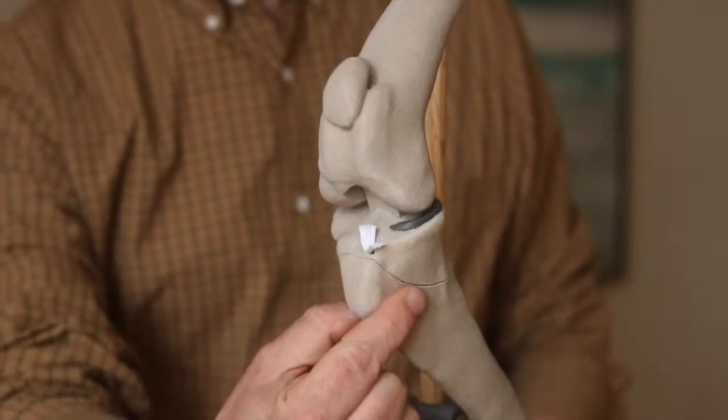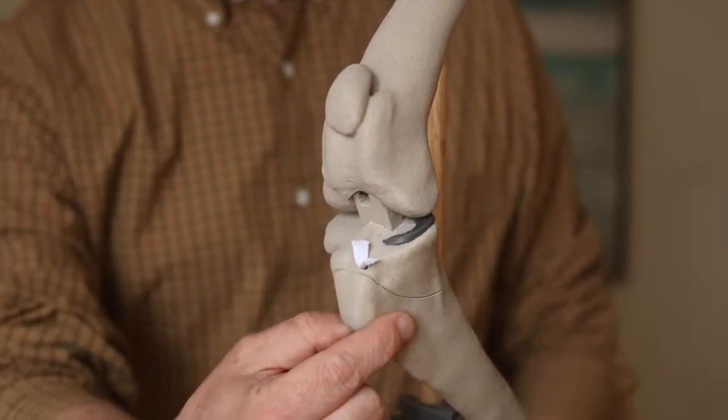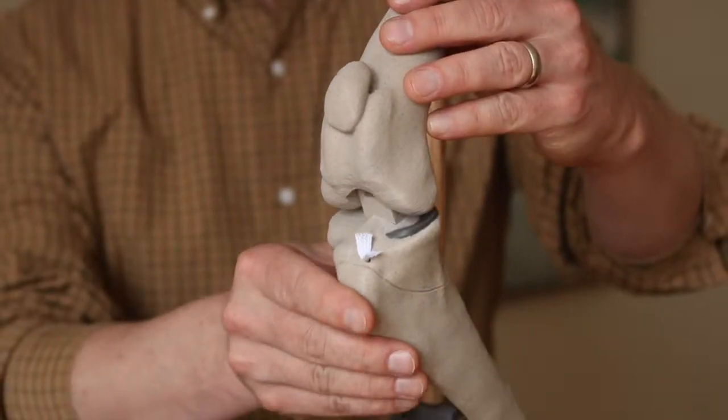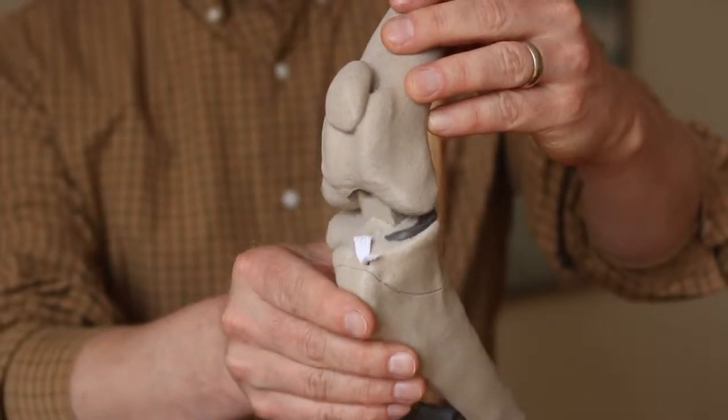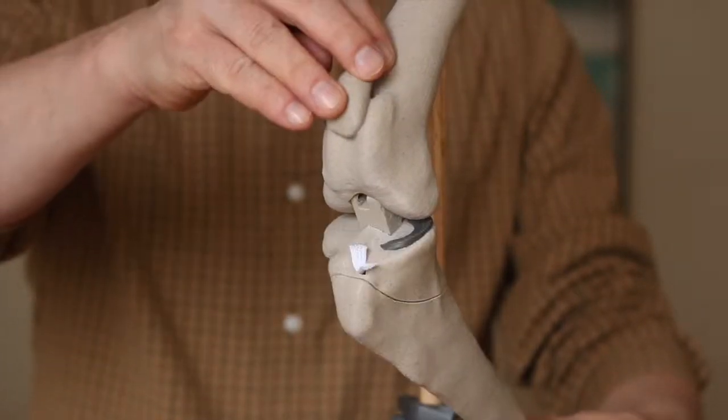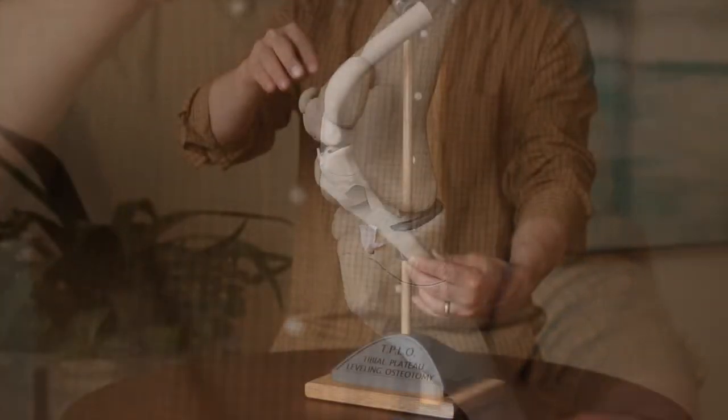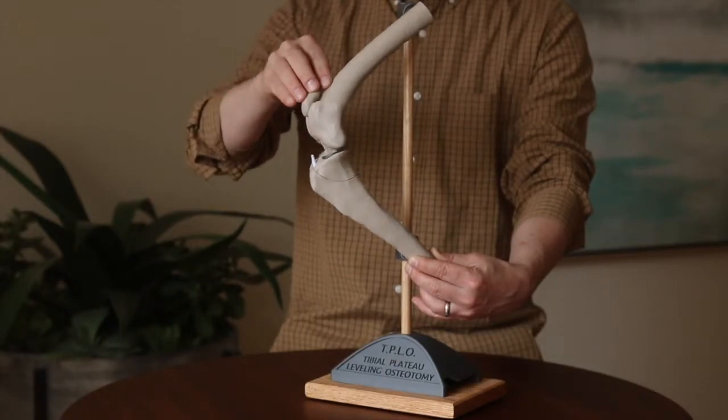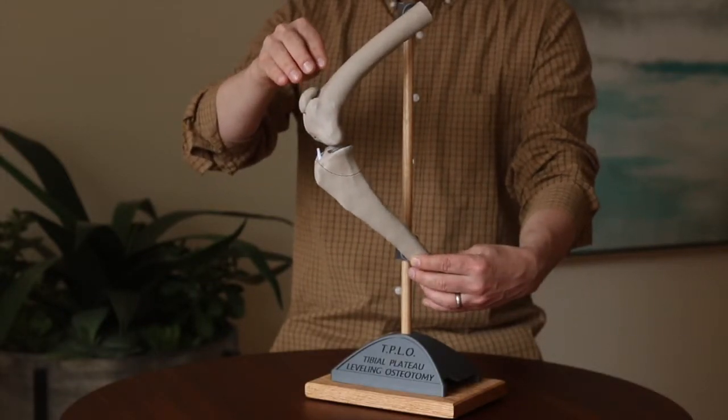And that motion happens when I move it with my hands, but it also happens during weight bearing. Every time the dog steps down, the femur shifts relative to the tibia.